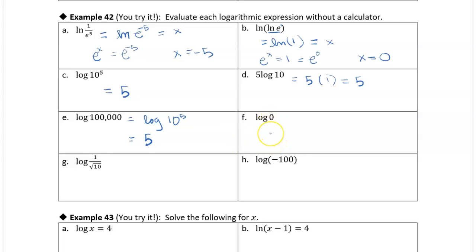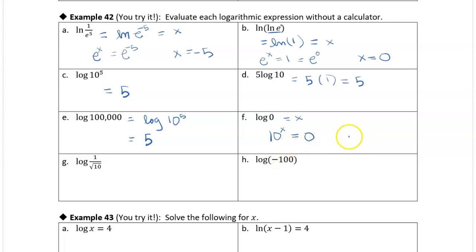What is log(0)? Let's think this through. If we set it equal to x, this is asking 10 to the x equals 0. Can we ever raise 10 to some power and get 0? No — we could take fractional powers like the square root of 10 or 10 to the one-millionth, getting small numbers, but we can never actually get 0. So this has no solution. We can never raise 10 to some power, even a negative power, and get 0.